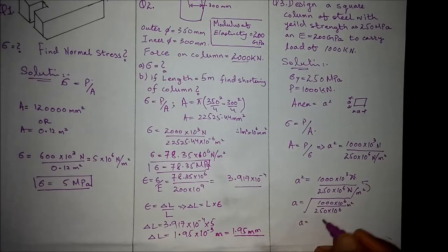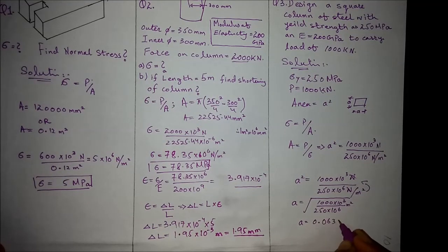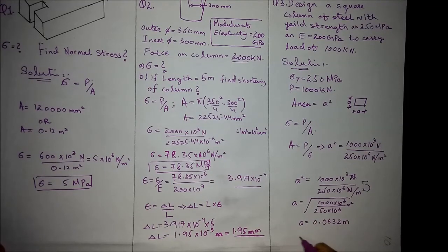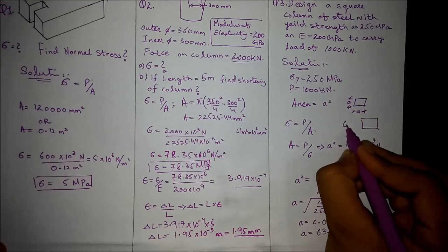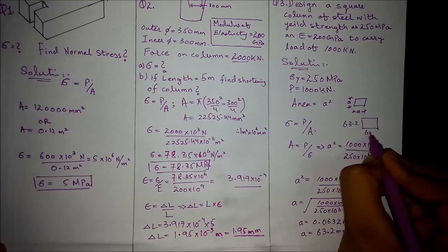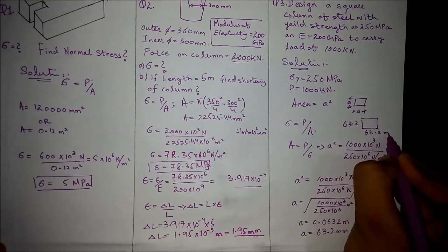A comes out to be 0.0632 meters, or you can say A equals 63.2 millimeter. So the column design would be 63.2 millimeter.